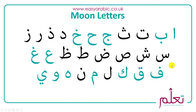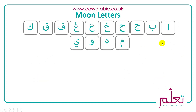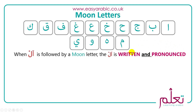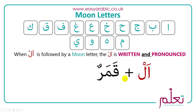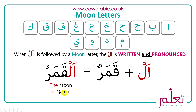The characteristic of these 14 moon letters is: when 'al' is followed by a moon letter, the lam is written and pronounced. For example, al plus qamar — qamar is one of those moon letters — so it equals al-qamar. The lam is written and it's also pronounced, giving us al-qamar.